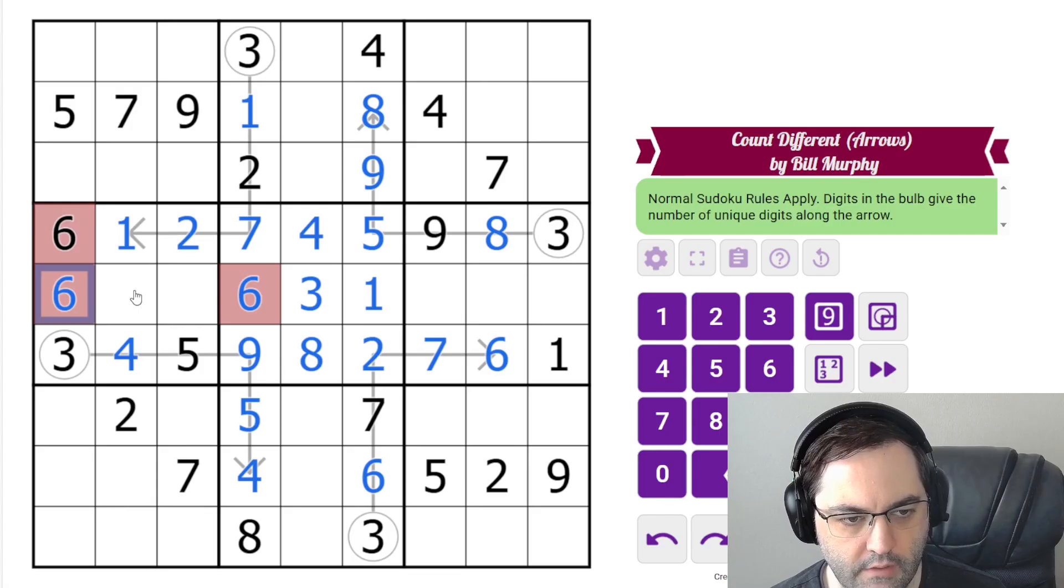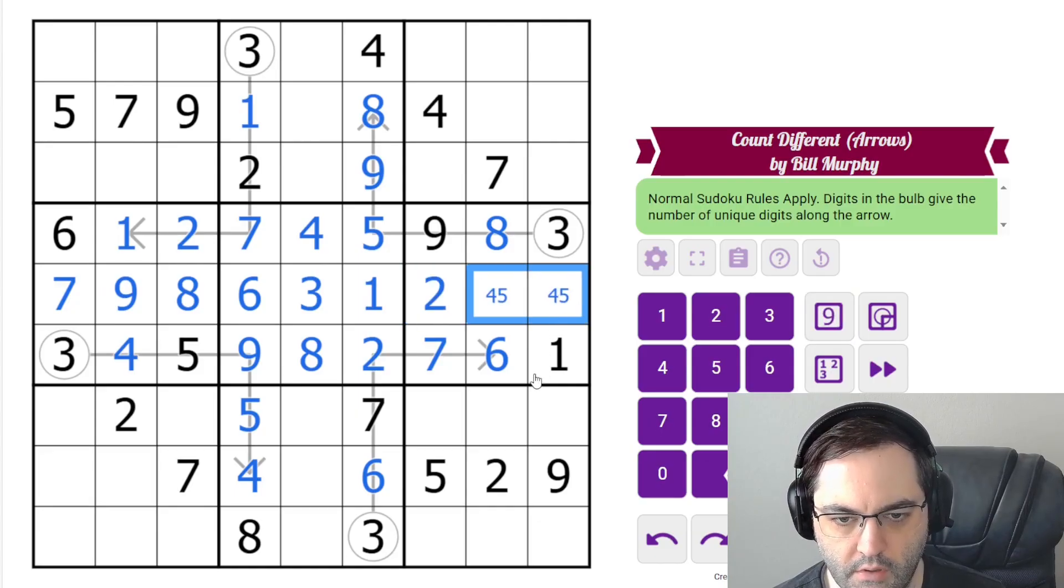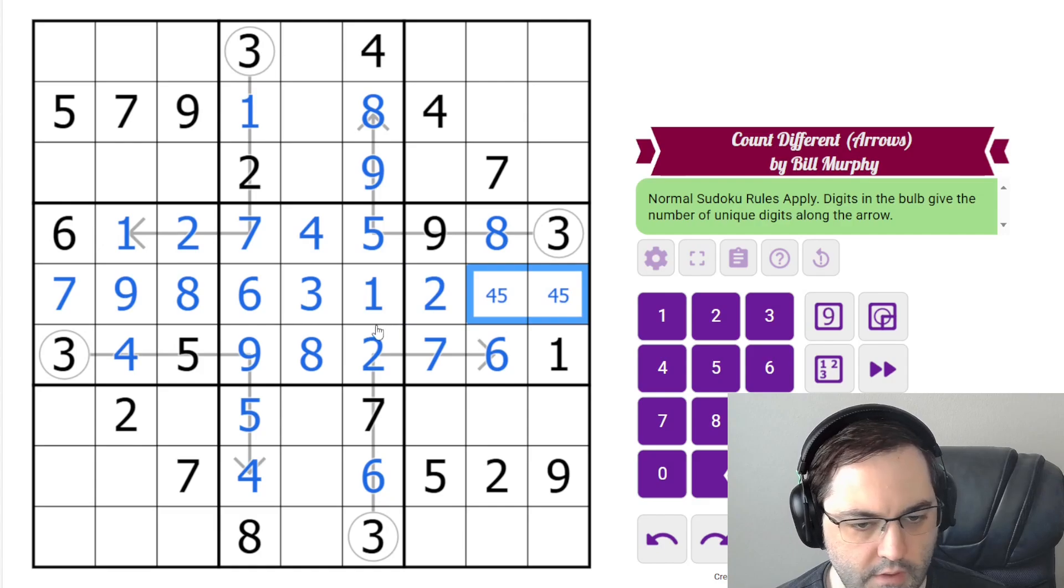And here we need seven, eight, nine. They're going to have to go in that order because of the given digits. These are two, four, five. We have some options here.